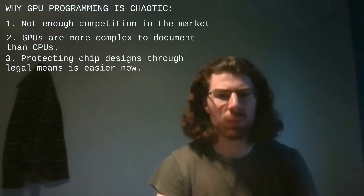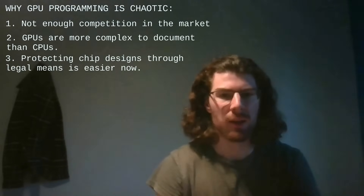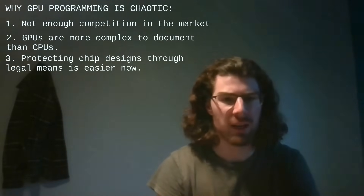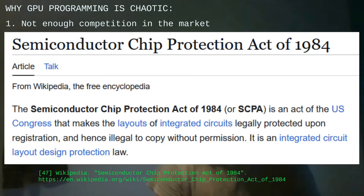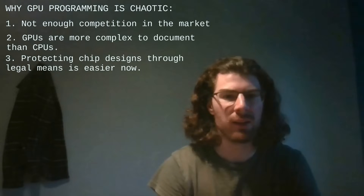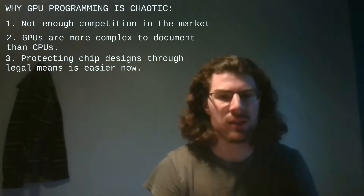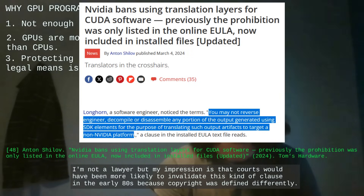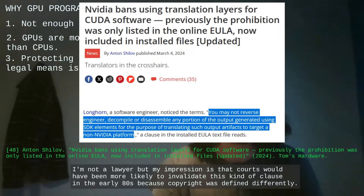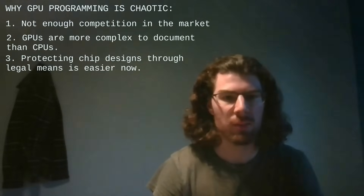And from a legal perspective, things have changed a lot since the early 80s. Governments have made it easier to copyright chip designs, and companies protect their intellectual property more aggressively. For instance, NVIDIA takes legal precautions to discourage running CUDA on other devices, to make sure their consumers stay locked in the same ecosystem.